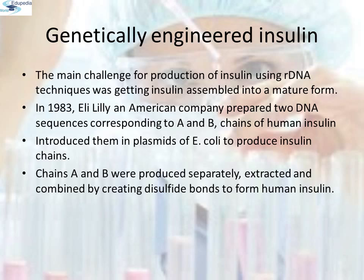Genetically engineered insulin. The main challenge for the production of insulin using recombinant DNA technique was getting insulin assembled into a mature form. In 1983, Eli Lilly, an American company, prepared two DNA sequences corresponding to the A and B chains of human insulin and introduced them in plasmids of E. coli to produce insulin chains. Chain A and B were produced separately, extracted and combined by creating disulfide bonds to form human insulin.